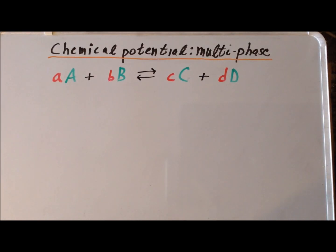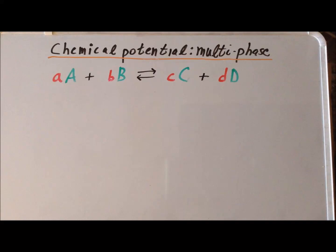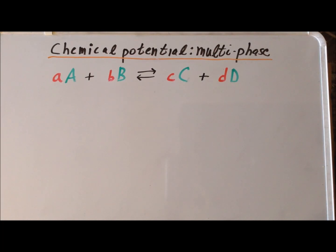Note that, particularly in advanced work, we can often write chemical reactions where the coefficients small a, small b, small c, and small d are not necessarily integers. But even if they are not integers, we can always recast the reaction in such a way as to make them integers. So for the purpose of this video, we are going to assume that they are integers.